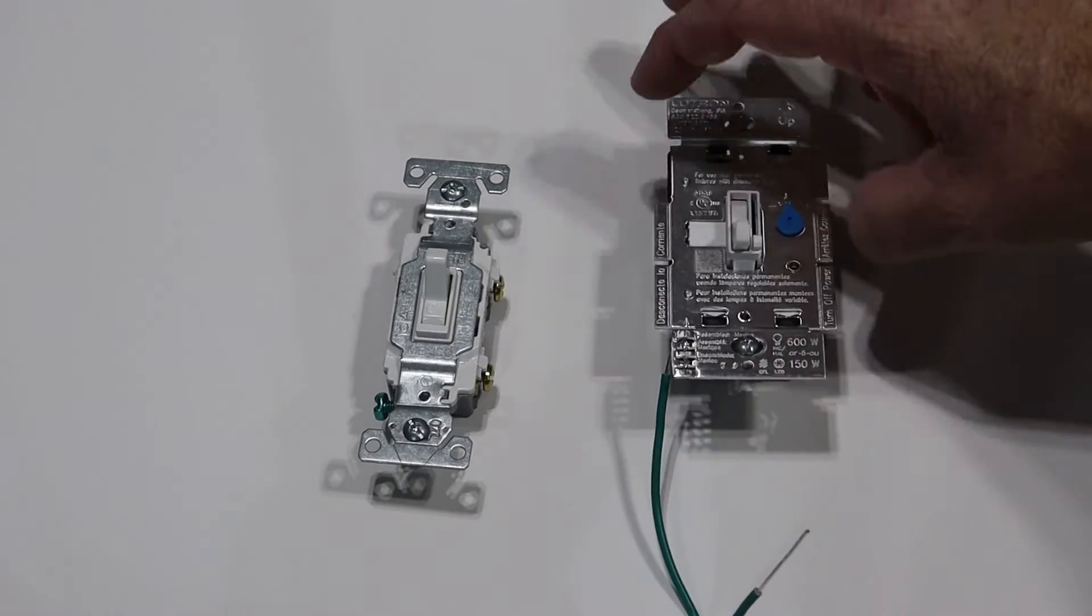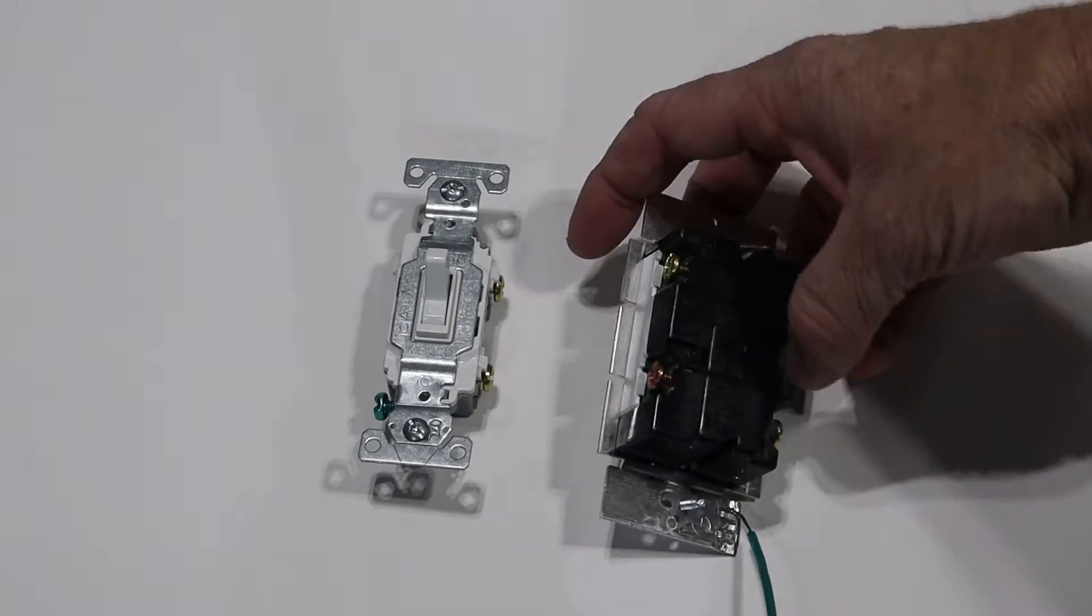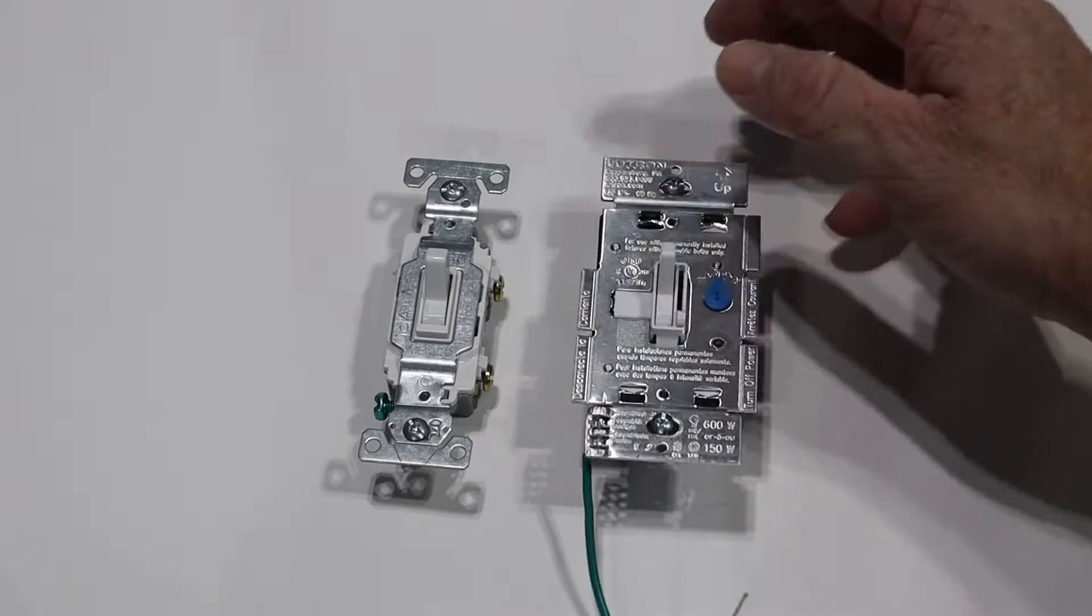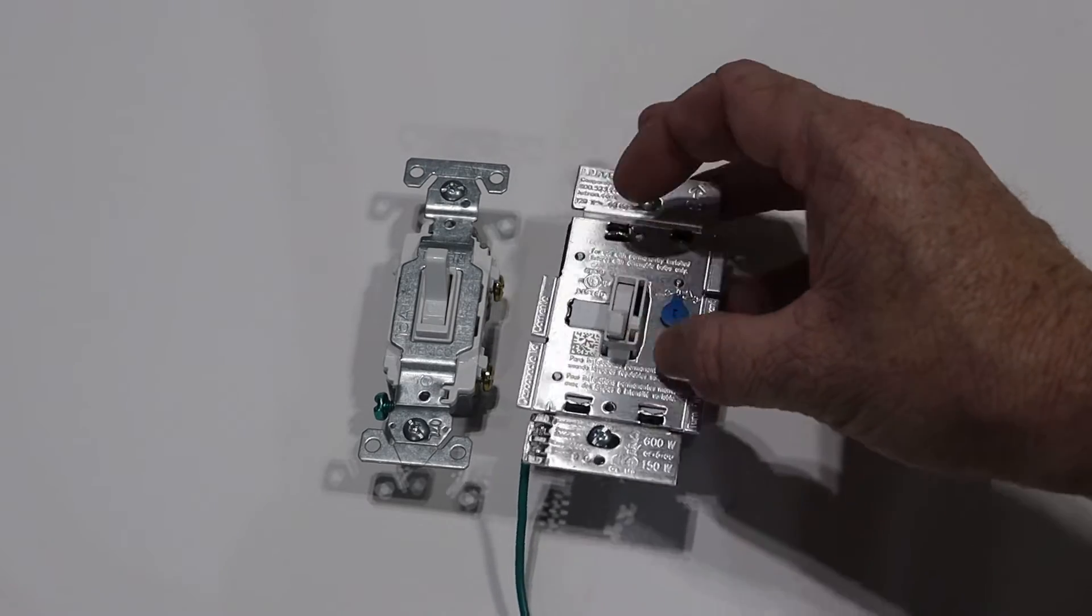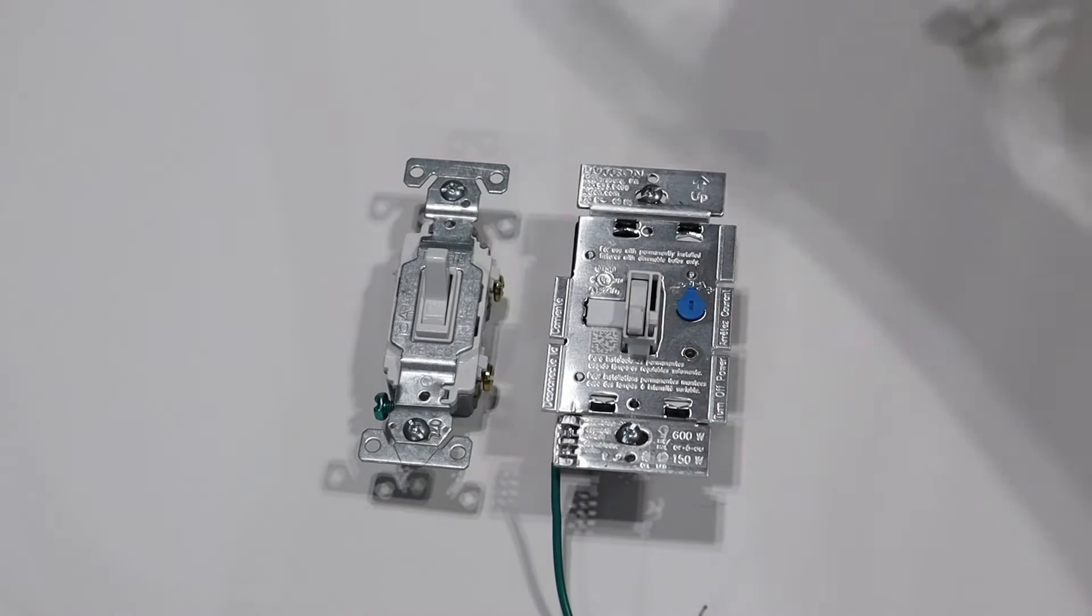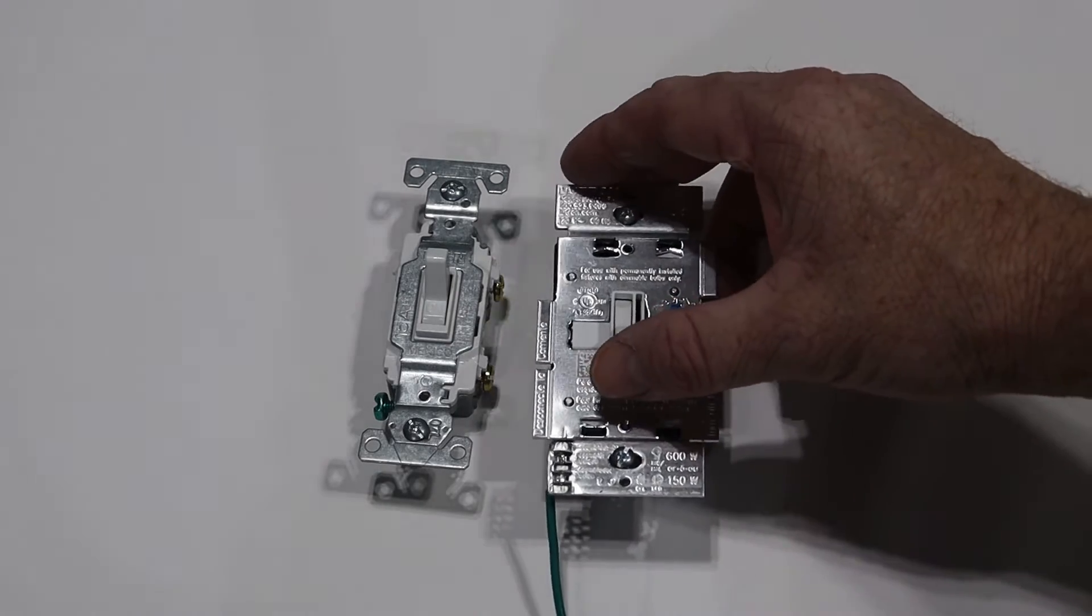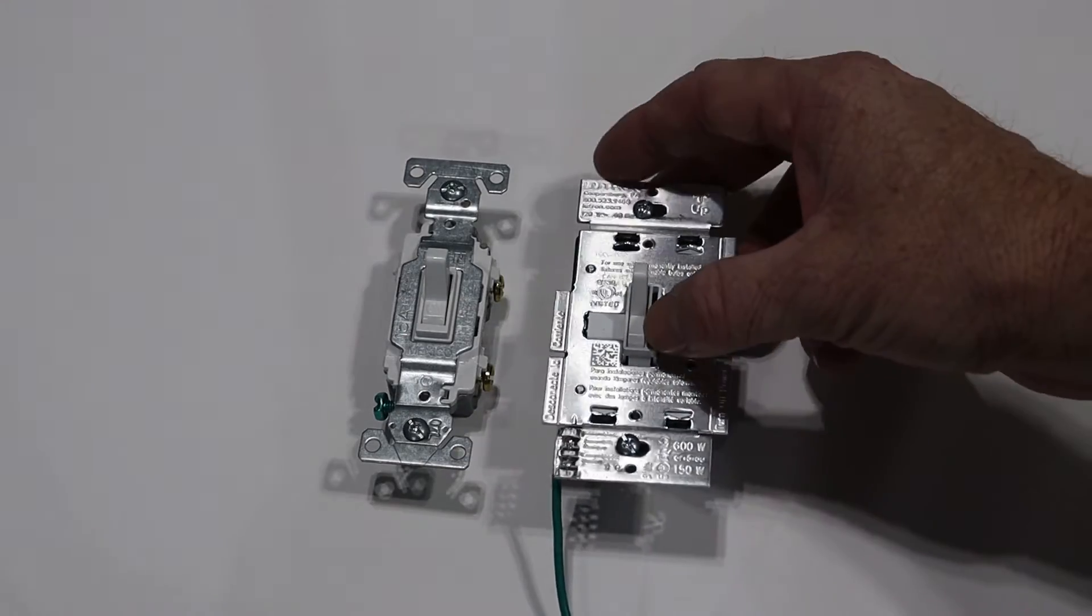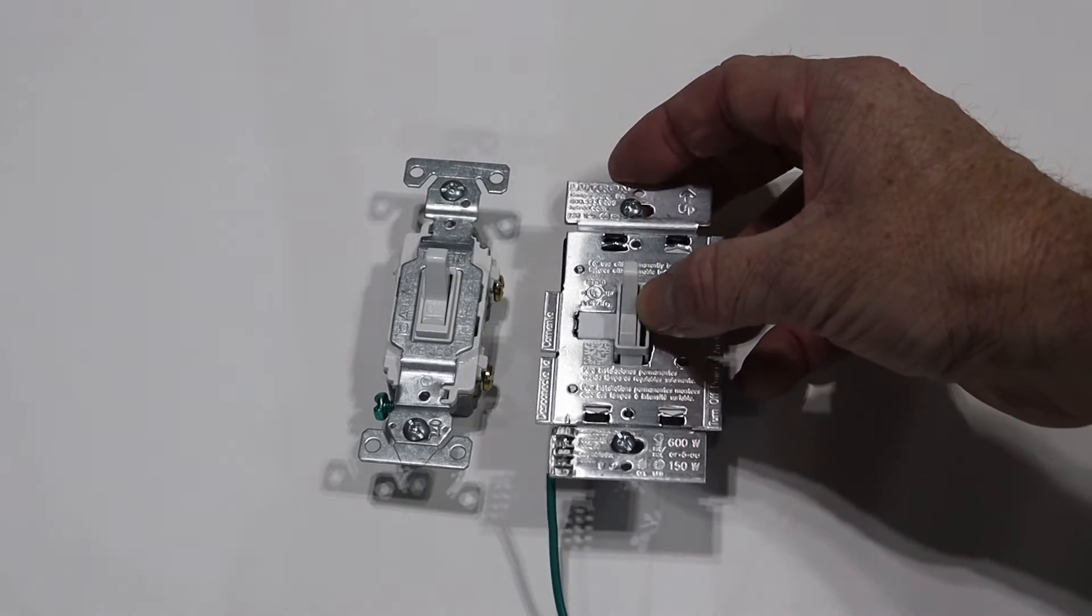So besides the little pigtail here this dimmer switch is basically the same thing. It has some screws where your black wires will hook up and it has a switch. The only difference is it has this little slide that controls how much voltage is actually making it to the light. If I want power going to my light I will flip the switch up and then using this slide I can make the light brighter or dimmer.